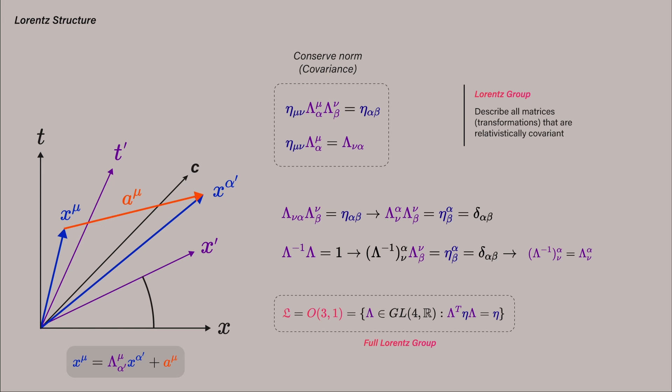The lambda element forms a group, meaning it behaves like a geometric number under multiplication, closure and all, and the name of this group is the Lorentz group.